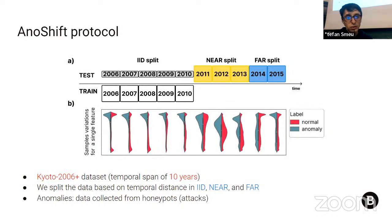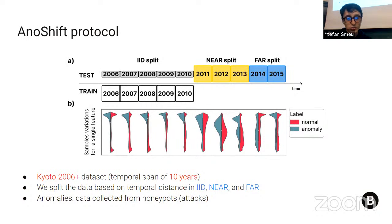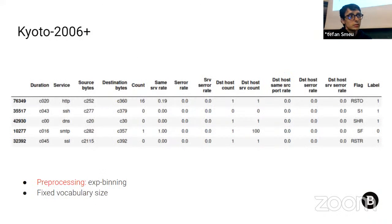We build the AnoShift benchmark on the Kyoto 2006+ dataset, which is an intrusion detection dataset spanning 10 years, with a natural distribution shift due to its extensive time span. We split the test data based on temporal distance into IID (independent and identically distributed), near, and far splits, and we show that a large variety of baselines fail to adapt to the far data when trained on temporally distant data. The anomalies in the Kyoto 2006+ dataset come from honeypots — unwanted traffic in the system.